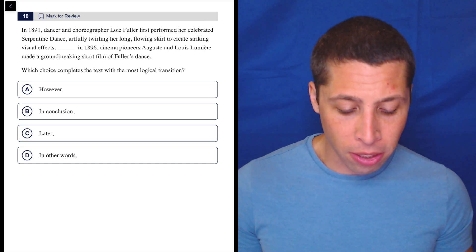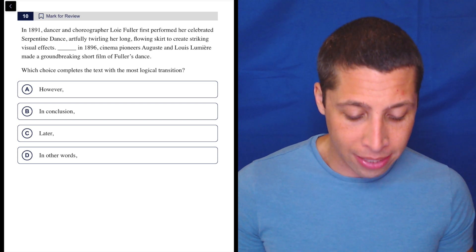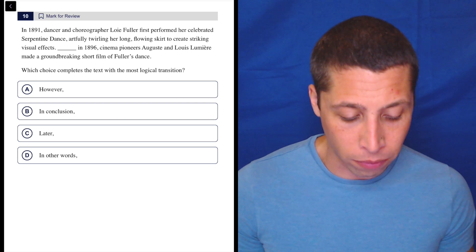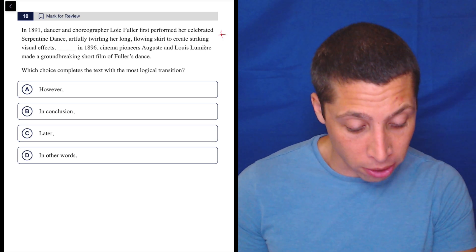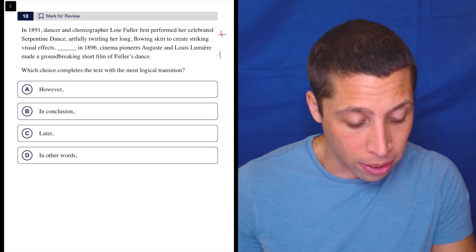In 1891, dancer and choreographer Louis Fuller first performed her celebrated serpentine dance, artfully twirling her long flowing skirt to create striking visual effects. This seems just good. In 1896, cinema pioneers August and Louis Lumiere made a groundbreaking short film of Fuller's dance. Again, that sounds good.